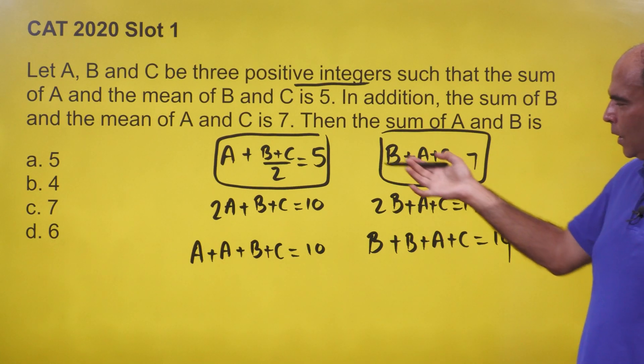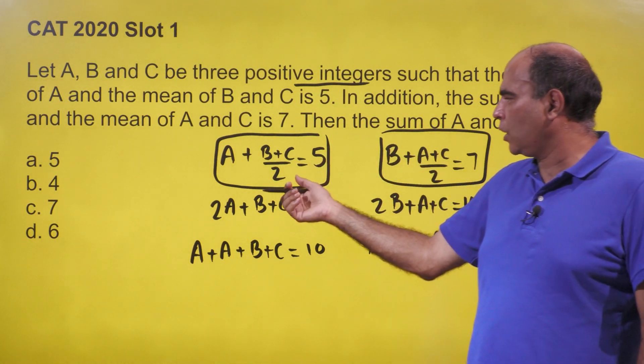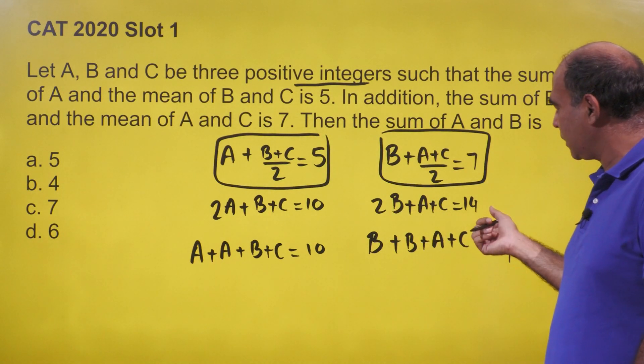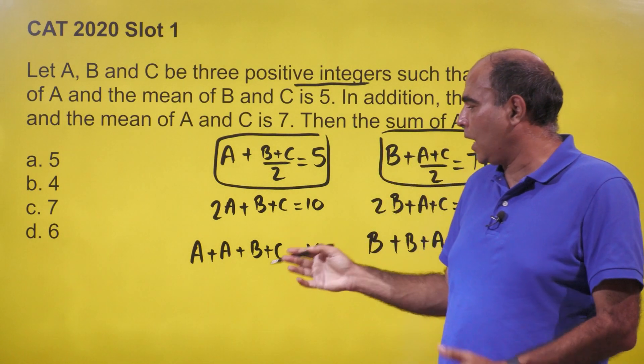The immediate reaction is to write: 2A + B + C = 10 and 2B + A + C = 14.